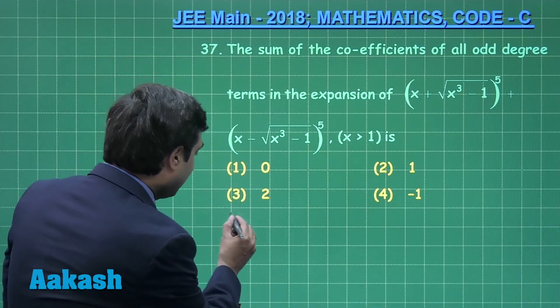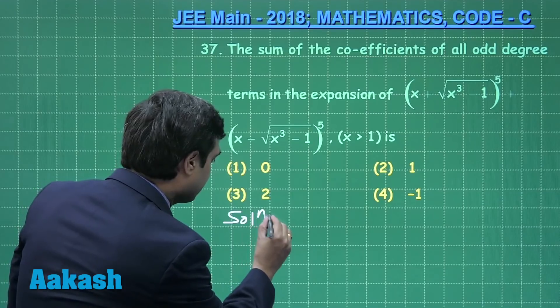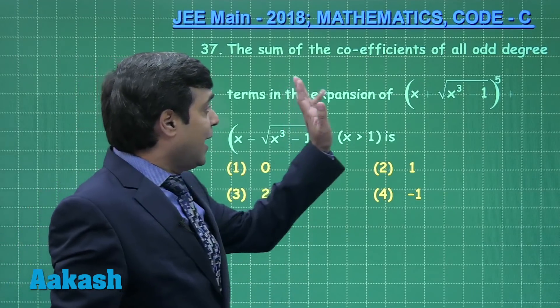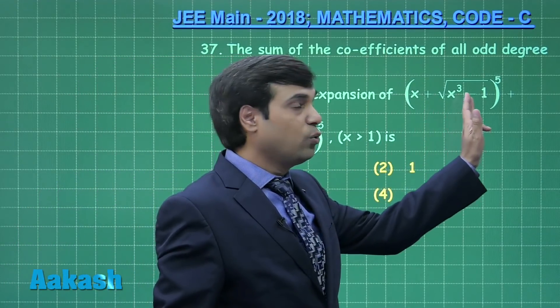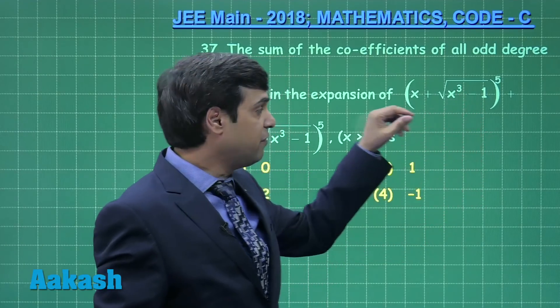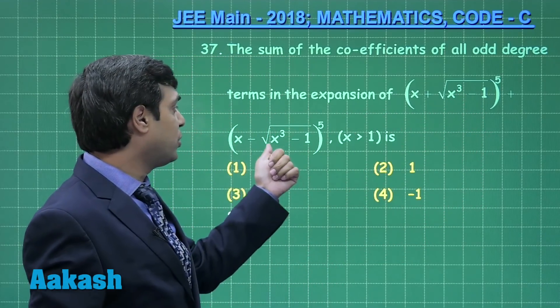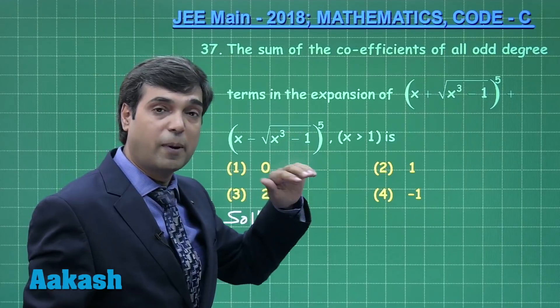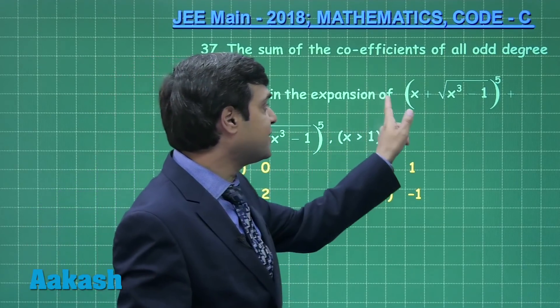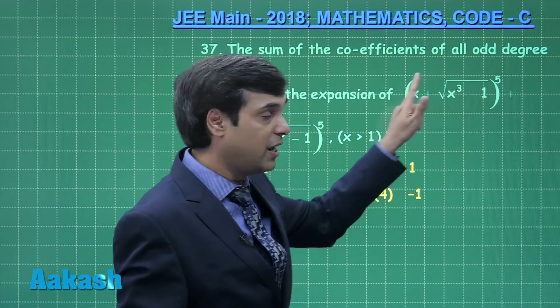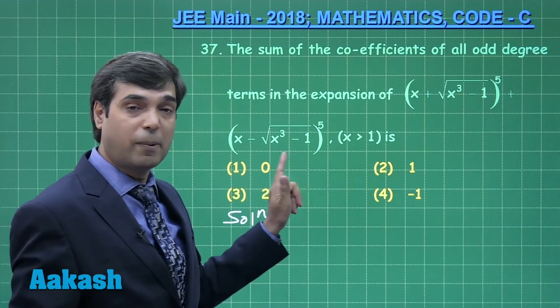A simple question. Let us start this one: (x + √(x³ - 1))⁵ plus (x - √(x³ - 1))⁵. We can read it as (a + b)⁵ plus (a - b)⁵.